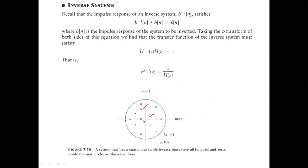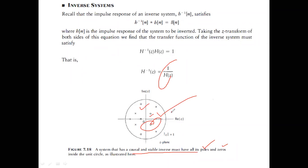Zeros did not affect stability before, but now that we are talking about inverse systems, the zeros of H(z) become poles of H⁻¹(z). Therefore: a system that has a causal and stable inverse system must have all its poles and zeros inside the unit circle. If you design an amplifier that is stable, its de-amplifier (inverse) should also be stable — identifiable directly from the transfer function.